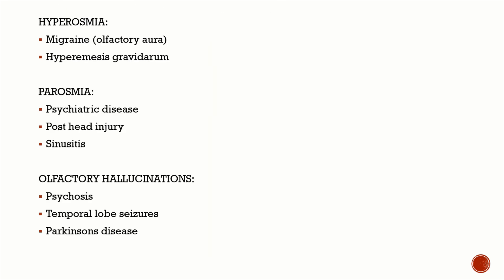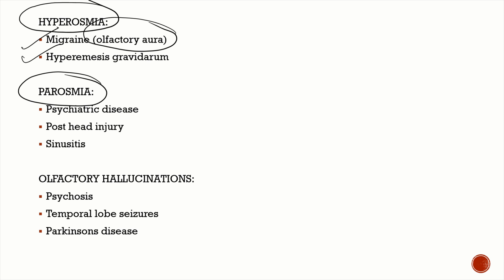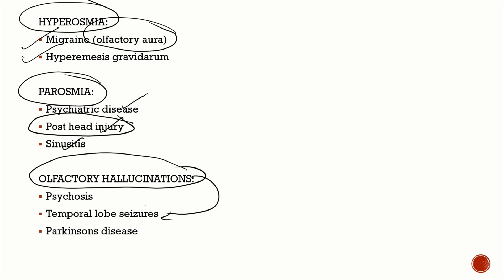Hyperosmia — acutely heightened sense of smell — is seen in migraine, where the most common aura is visual, but rarely an olfactory aura occurs with heightened smell sensitivity, and also in hyperemesis gravidarum. Parosmia is seen in psychiatric diseases, post head injury, and sinusitis. Olfactory hallucinations are caused by temporal lobe seizures and psychotic disorders, and are also an important non-motor manifestation of Parkinson's disease. That covers the olfactory nerve — know the examination method and key viva questions.